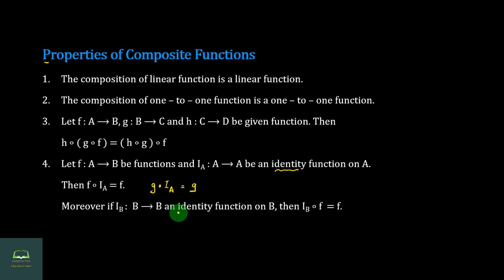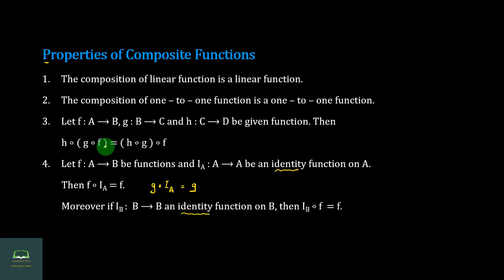IOP is a function from B to B and the identity function on B. Properties include: linear functions compose to linear, one-to-one functions compose to one-to-one, associative law, and property number 4 involving identity functions. I will see you in the next video.